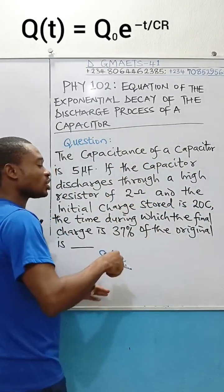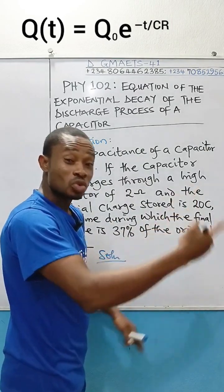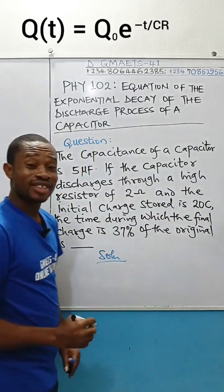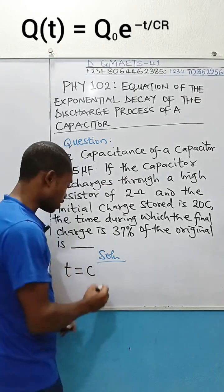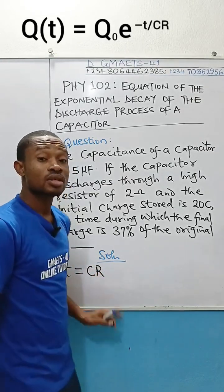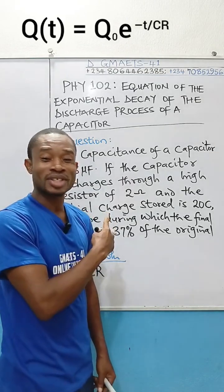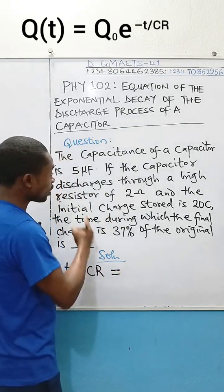The time when the final charge will become 37% of the original charge is called the time constant. And the time constant T is simply the capacitance of the capacitor times the resistance. That's how simple this question is. Now, what is the capacitance of the capacitor here?